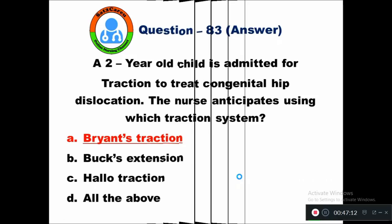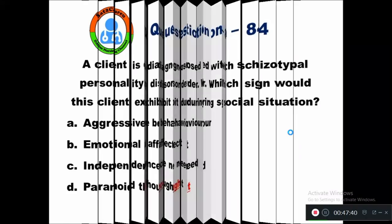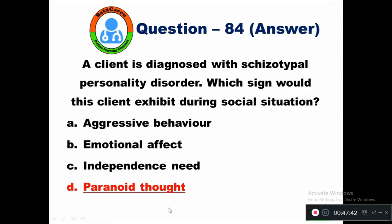Question 84: A client is diagnosed with schizotypal personality disorder. Which sign would this client exhibit during a social situation? Option A aggressive behavior, B emotional affect, C independence, D paranoid thought. In schizotypal personality disorder, the sign to notice is paranoid thinking.